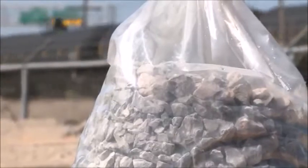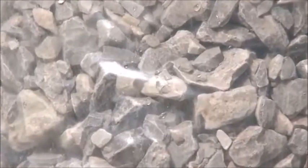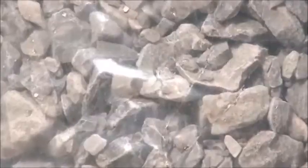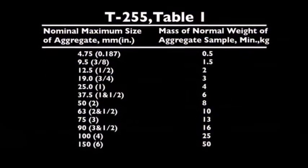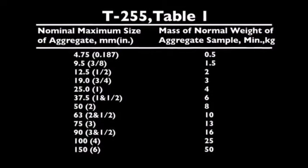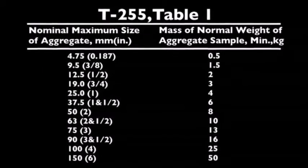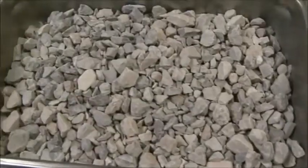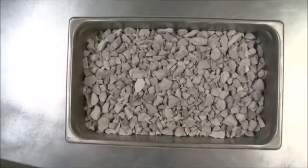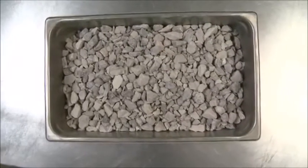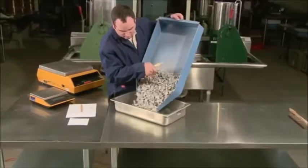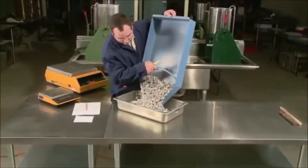Be sure your sample has been obtained according to AASHTO T2 and has been transported and stored in a moisture-proof container. Table 1 lists minimum sample sizes for aggregates of differing nominal maximum sizes. The depth of the sample must not exceed one-fifth of the container's narrowest width. Make certain that the sample mass meets the minimum requirement.